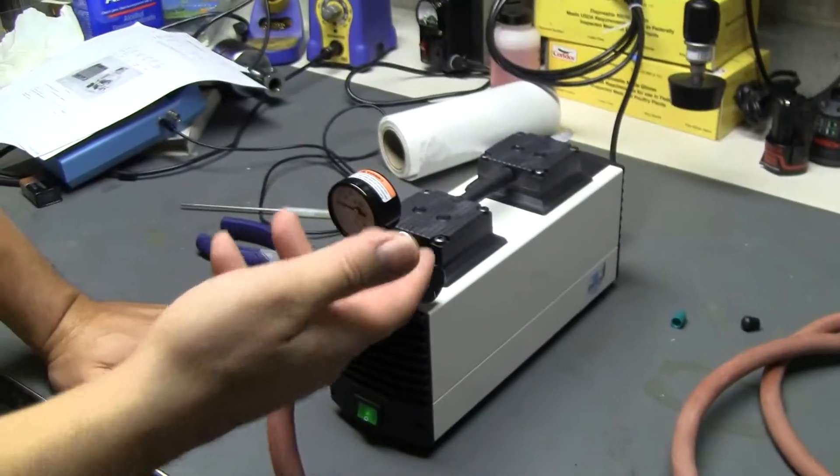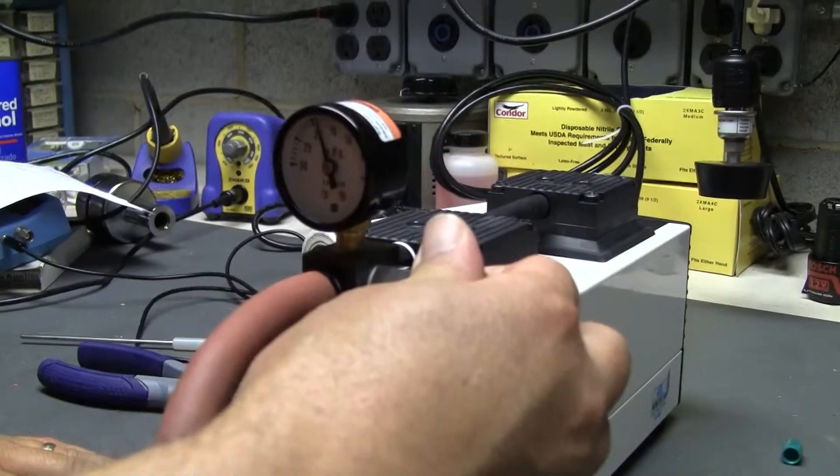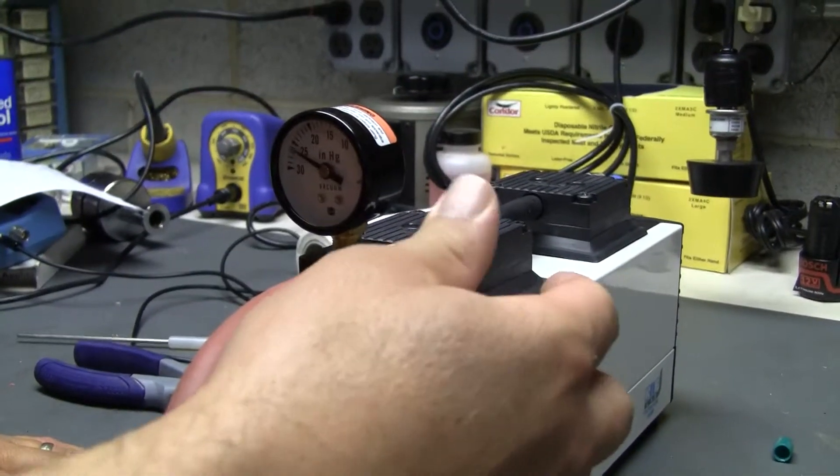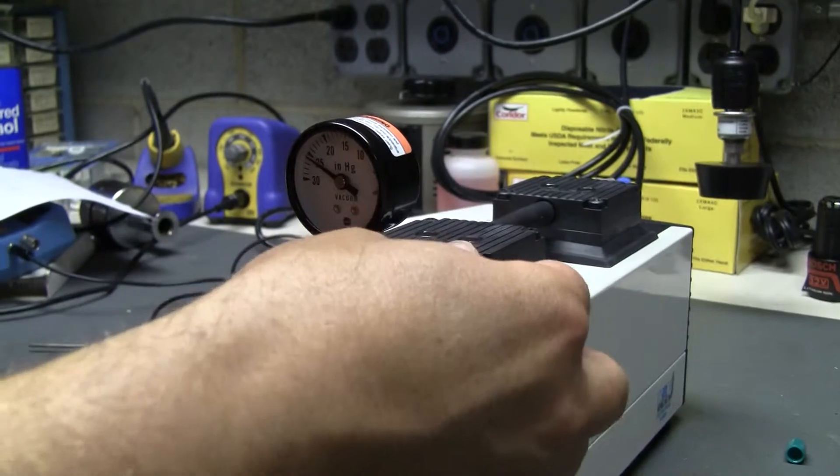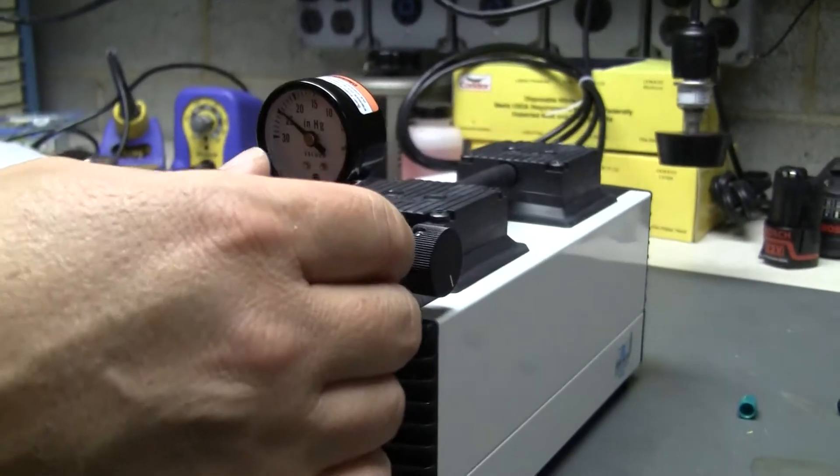So, what's nice about this particular model, it's got this little gauge, which if you wanted to control the vacuum a little bit manually, you can. It'll ballpark it for you, which is really nice.